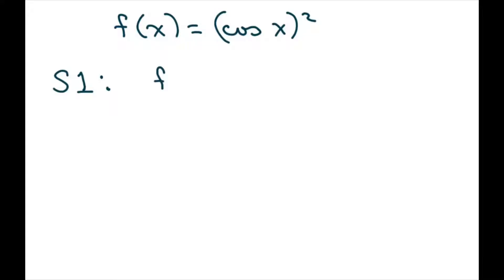So f prime of x equals, we'll do the chain rule 2, times the inner function, times the derivative of the inner function. Derivative of cosine is negative sine.